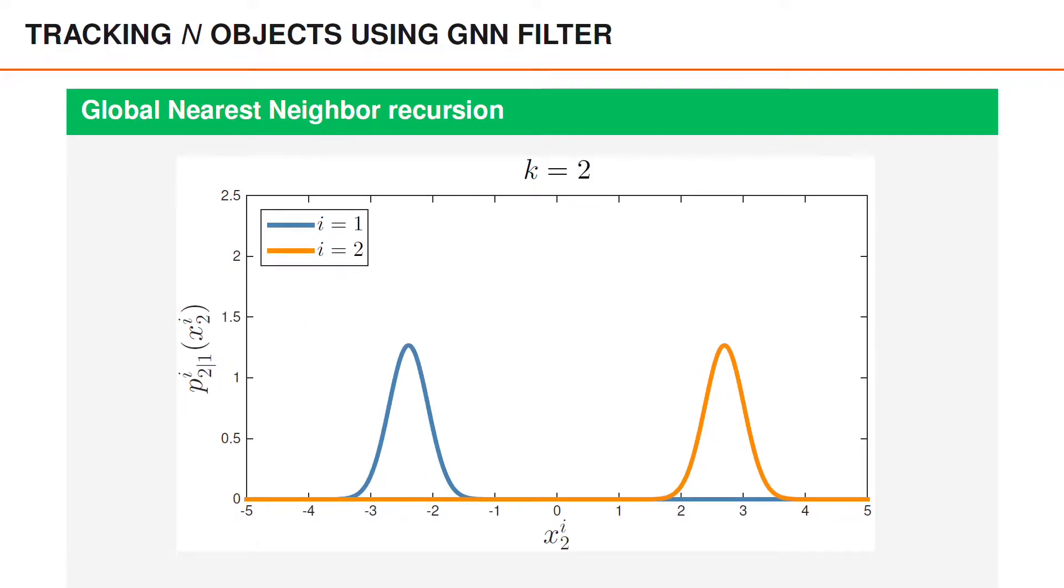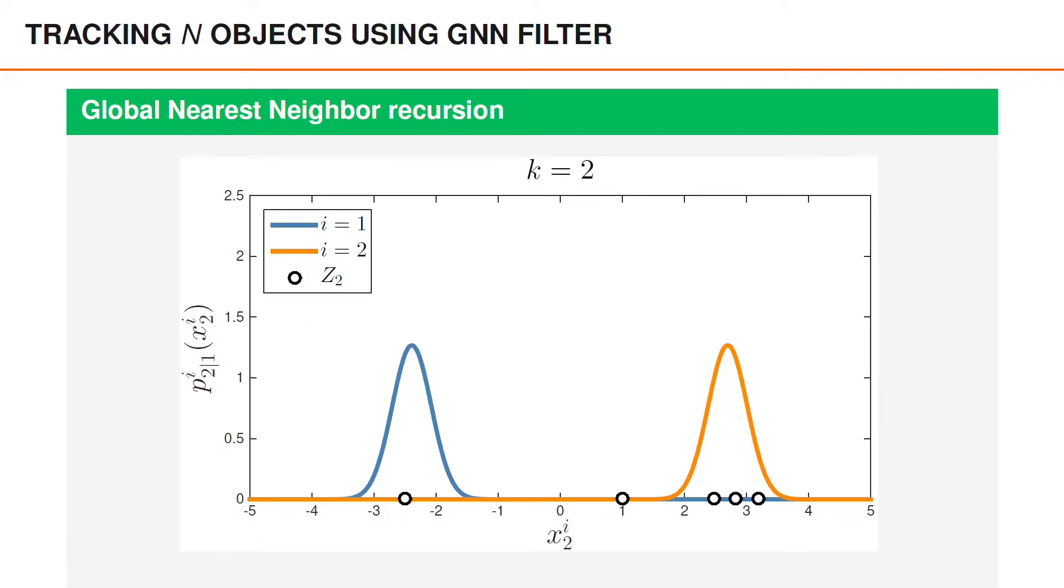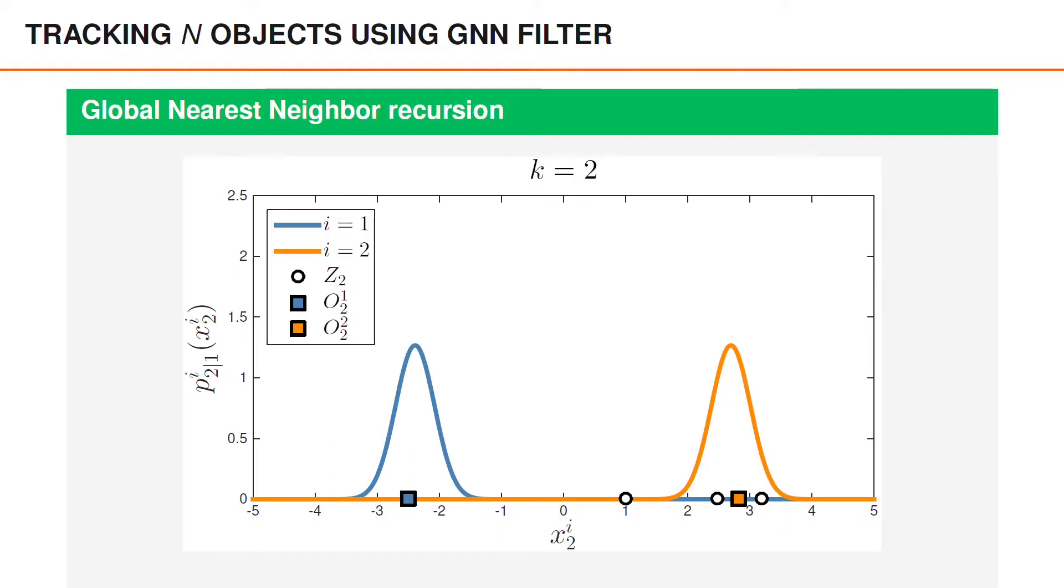Next we predict to time 2. We get a set of detections. This time we have 5 detections. We compute an optimal assignment and we use it to update the object densities. So that's how the GNN recursion goes. We predict, we compute an optimal assignment, and we update.